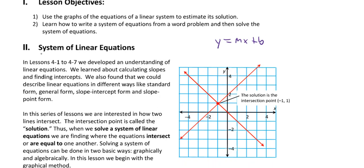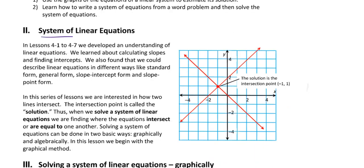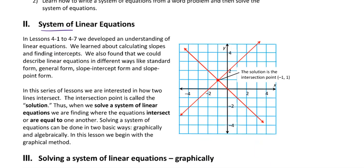When we have a system of linear equations, it just means two equations. We've got two lines to graph. Where they cross will be the solution to the system, and I'll explain why we consider that point a solution.